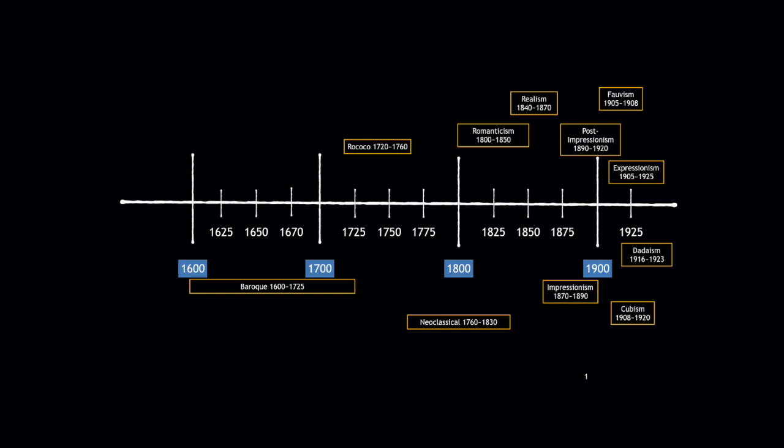Right around the turn of the century in the 1900s we get about 10 to 12 art movements. At the beginning we're just going to be studying one art movement in different geographical locations, and as we move on we will look at different art movements and how they are reactions to each other. We're going to start with the Baroque, which happens around 1600, and eventually we'll make our way all the way to Cubism and Dadaism.